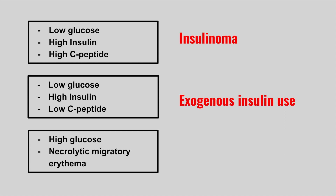The next patient has high glucose levels with a rash called necrolytic migratory erythema. This is a glucagonoma. Look out for subtle details in the vignette, including recently diagnosed diabetes and a skin rash.